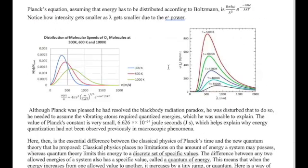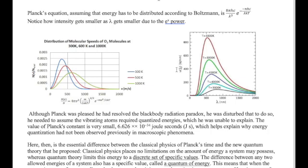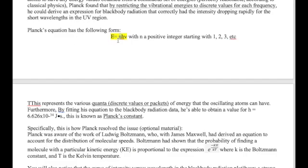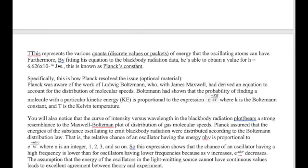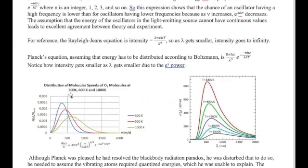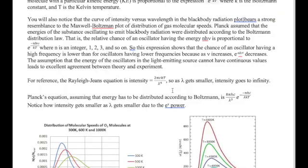The way Planck was able to use this new idea of restricting the values of energy is based on looking at another equation with a very similar plot distribution — the distribution of molecular speed or kinetic energy given in the Maxwell-Boltzmann equation, which we had discussed a couple of chapters ago. The shape of those plots is very similar to the shape of the blackbody radiation plots, and that's what gave Planck the idea that perhaps the Maxwell-Boltzmann equation could be applied to the case of blackbody radiation.